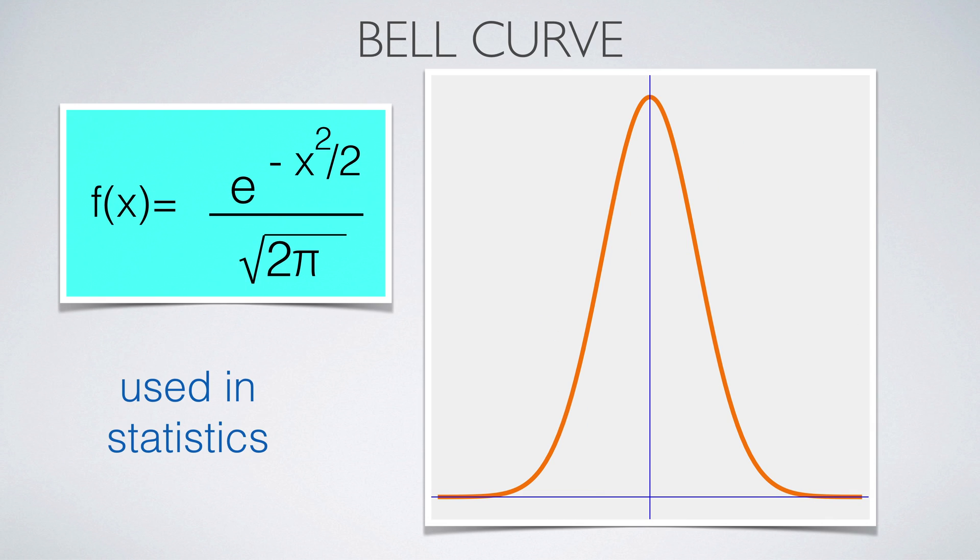This is the bell curve, which gives the Gaussian distribution in statistics. It has a similar shape to the Maria Agnesi function, but unlike the Agnesi function, it has finite variance. The function is continuous everywhere and has horizontal asymptotes at infinity.